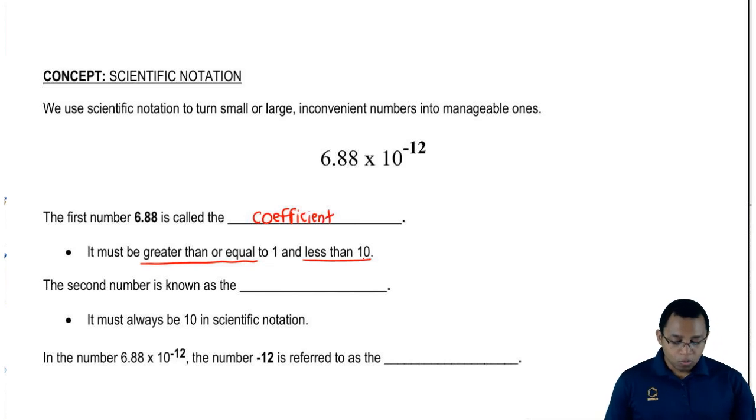We're going to say that the second number, which is the 10, is known as the base. When it comes to scientific notation, the base is always 10. That's not ever going to change.